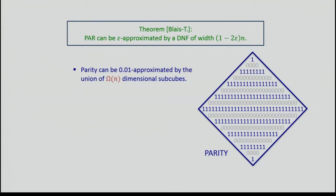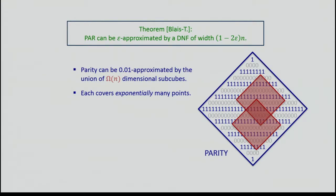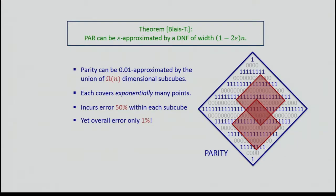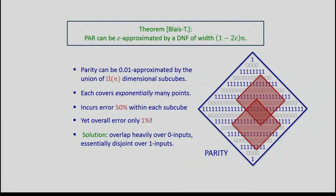Let me spend one slide on why this result is still surprising. Parity can be epsilon-approximated by a DNF of width (1 - 2ε)N — meaning, for constant epsilon, parity can be approximated by a union of linear-dimensional subcubes. Each subcube covers exponentially many points, and since the underlying function is parity, for every one I cover, I cover a zero as well — making error 50% locally. And yet we can align the cubes so the overall error is 1%. The solution is to get the cubes to overlap heavily over zero inputs while being essentially disjoint over one inputs.